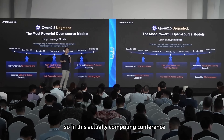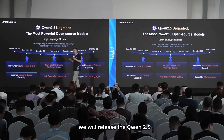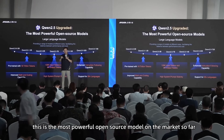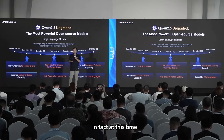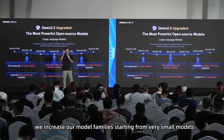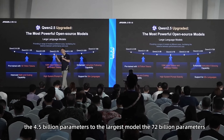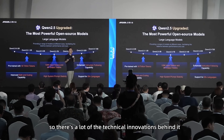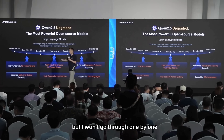At this computing conference, we just announced Qwen 2.5, the most powerful open source model on the market so far. We expanded our model families starting from very small models — 0.5 billion parameters — to the largest model at 72 billion parameters. There are a lot of technical innovations behind it, but I won't go through them one by one.